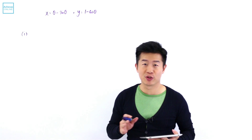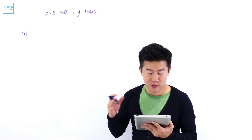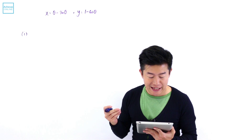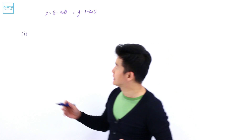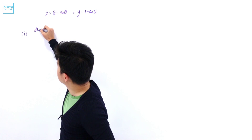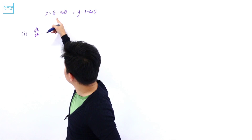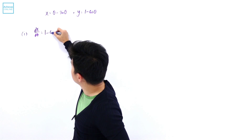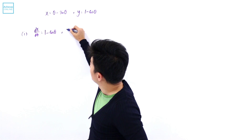There are actually three parts to this question. With the first part, we want to find dy/dx and show that it is cotangent of half theta. To do that, let's find dx/dθ. dx/dθ is going to be 1 minus cosine theta.